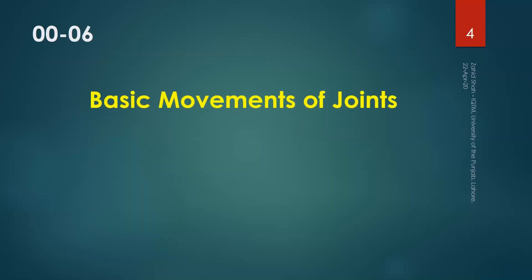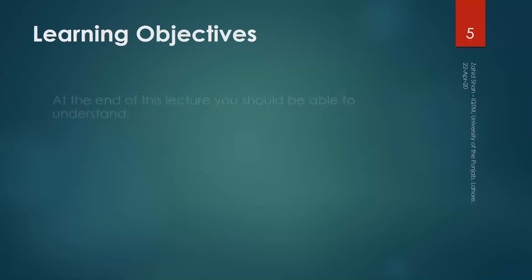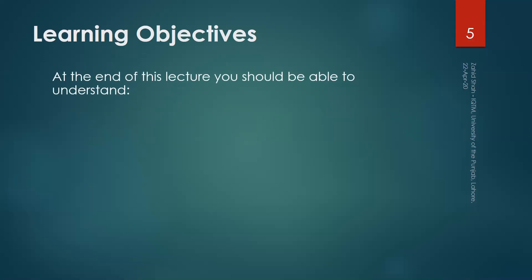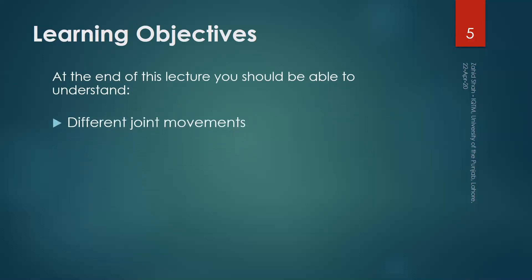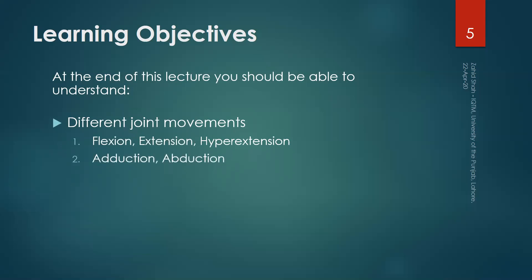In this segment we will discuss basic movements of joints, and in the following segment we will discuss types of joints. The learning objectives of this segment include understanding different joint movements: flexion, extension, and hyperextension; adduction and abduction; rotation and circumduction.